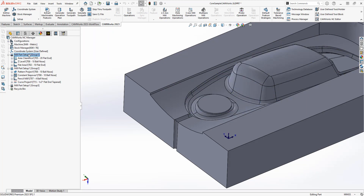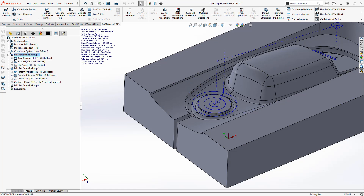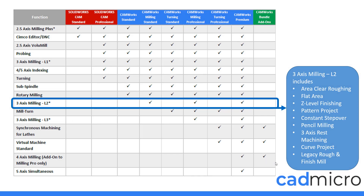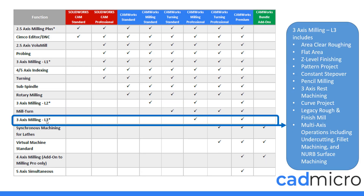The top three toolpaths are available in SOLIDWORKS CAM, and all of the toolpaths are available in CAMWorks. The last one to look at is three axis milling level three, where we've now included a multi-axis operation that includes undercutting, fillet machining, and NURBS surface machining. We can do fillet machining in some of the other toolpaths, but it doesn't have the flexibility that the multi-axis operation has.